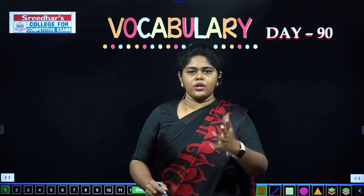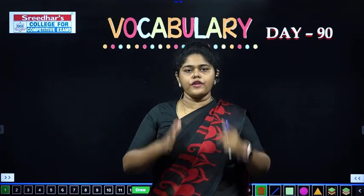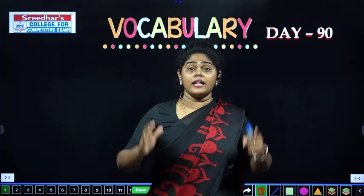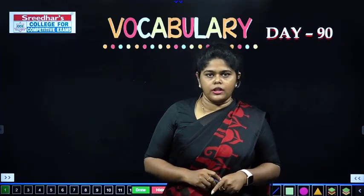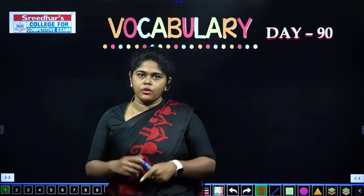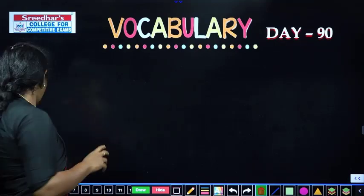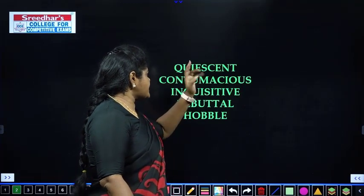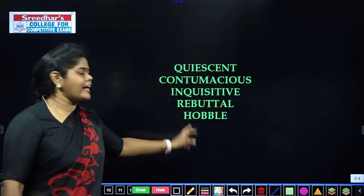You can know the same meanings. Even though you do not practice that word, you will not retain it. You have to frame your own examples — you can try and create that meaning, and you can know that word. If you do it, you can experience this. Please comment on what you guys are thinking about it. So the five words are: quiescent, contumacious, inquisitive, rebuttal, and hobble.